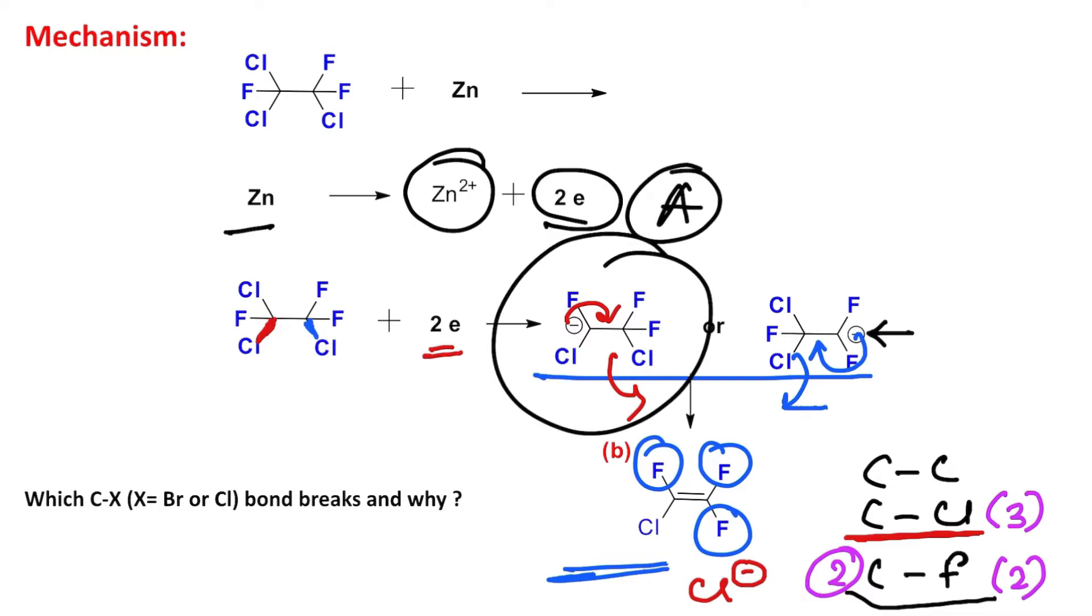You can see the acidity of chloroform: pKa is 15.7, whereas the pKa of fluoroform is 25 to 28. We might think that since fluorine is more electronegative, CHF₃ should be more stable.